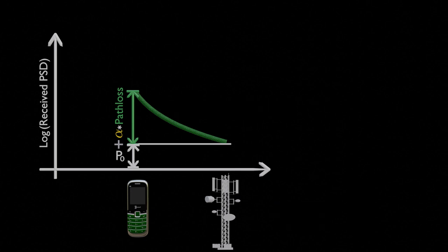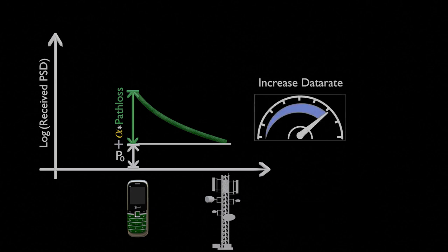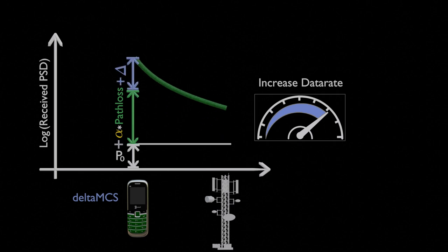Sometimes the base station might want to boost the data rate for a specific UE. To do this, it sends a Boolean parameter called delta-mcs to the UE, telling it to increase its power in proportion to its data rate. The value of delta-mcs is a simple on-off switch that instructs the UE to ramp up its power by delta. The value of delta is estimated with Shannon's capacity equation, and varies in proportion to the uplink data rate.